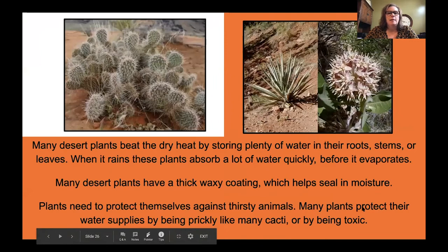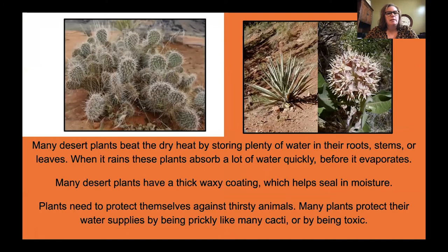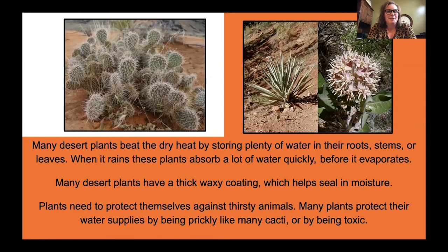Many desert plants beat the dry heat by storing plenty of water in their roots, stems, or leaves. When it rains, these plants absorb a lot of water quickly before it has time to evaporate. Many desert plants have a thick waxy coating which helps seal in moisture. Plants also protect themselves and their water supply by having prickly outer surfaces like a cactus, or by being toxic, which deters animals from getting at the moisture inside.